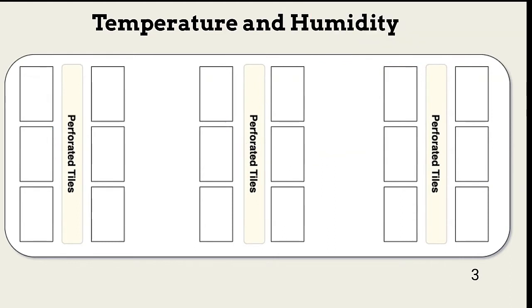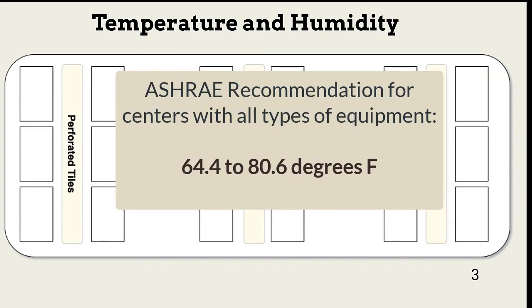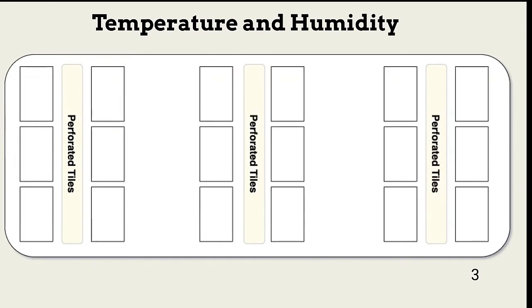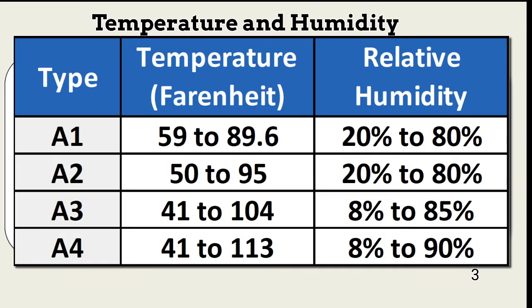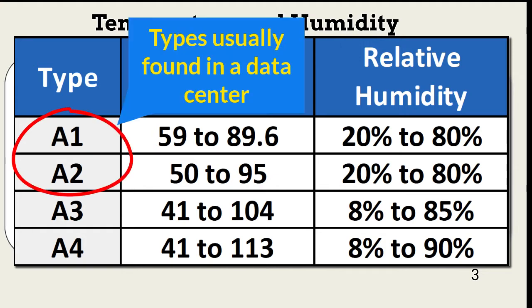There are various temperature and humidity recommendations based on the type of equipment protected and its criticality. The American Society of Heating, Refrigerating, and Air Conditioning Engineers, or ASHRAE, recommends keeping data centers between 64.4 to 80.6 degrees Fahrenheit to address temperature requirements for all types of equipment. The table shown depicts the equipment types and the temperature and humidity requirements for each.